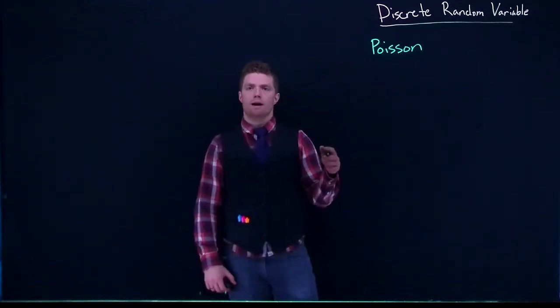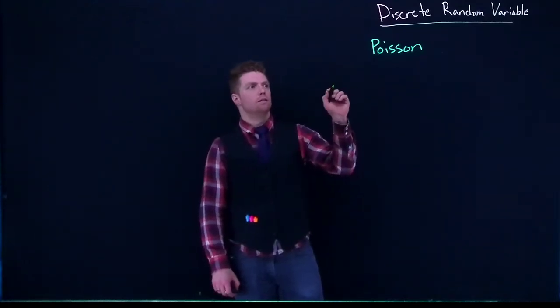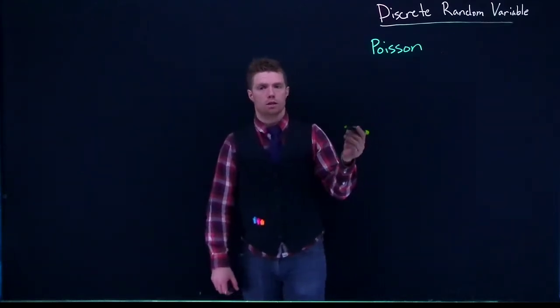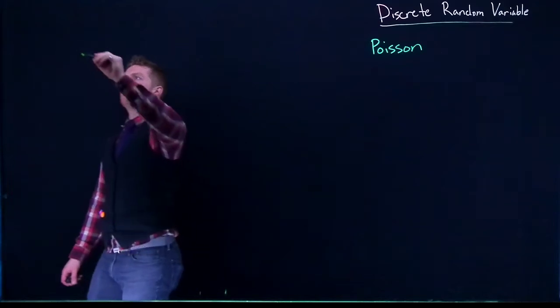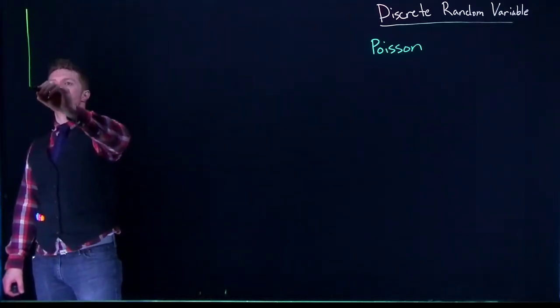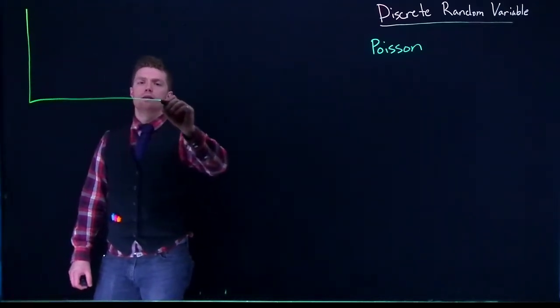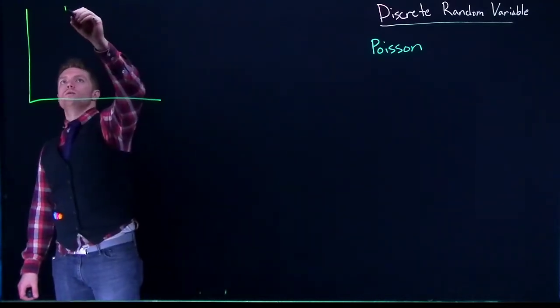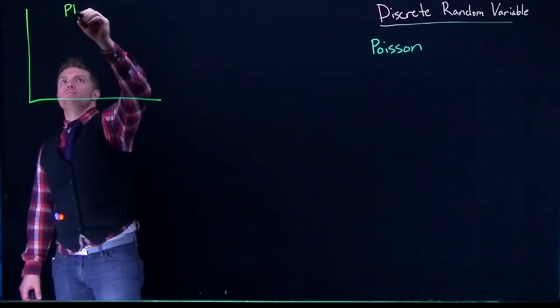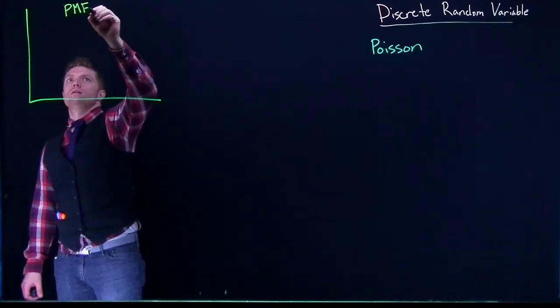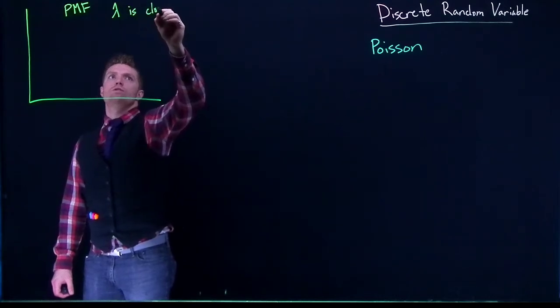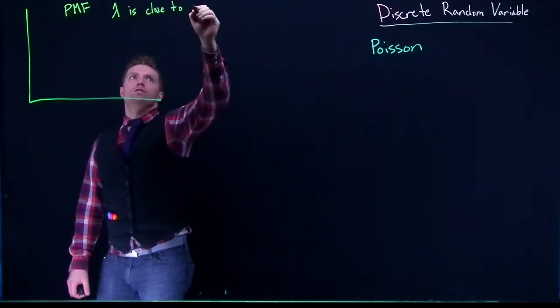Okay, let's talk a little bit about how a distribution that is Poisson can actually look. So if we have means that are pretty close to zero, we'll call this our PMF and we'll say lambda is close to zero.